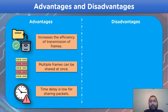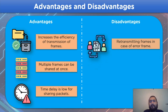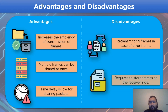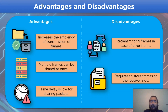As for disadvantages: the retransmission of frames in case of an error in the network channel is very difficult work, and it also requires storing of frames on the receiver side that it receives from the sender side.